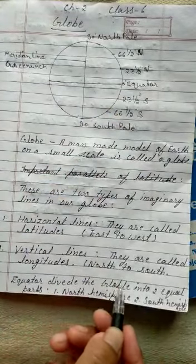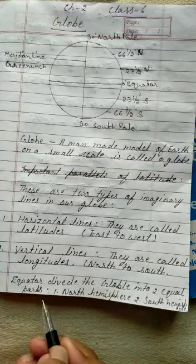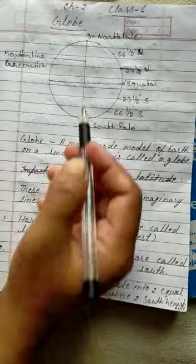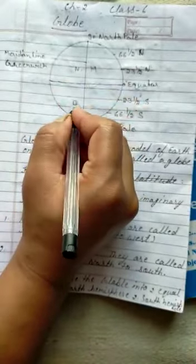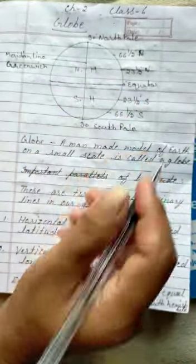Equator divide the globe into two equal parts. First, north hemisphere. ये है अपना north hemisphere. और ये है अपना second, south hemisphere.